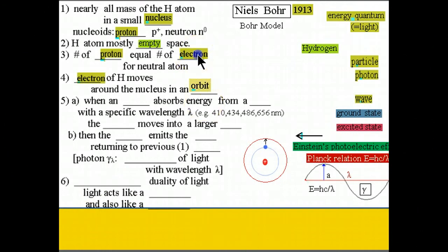When an electron absorbs energy from a photon, and a photon is light with a specific wavelength, the electron moves into a larger orbit.